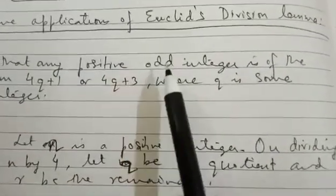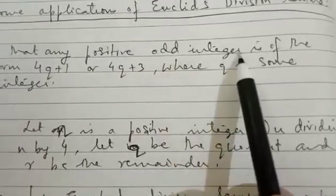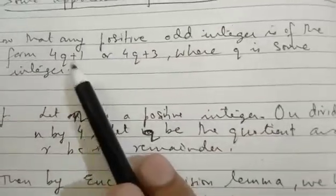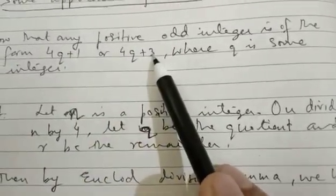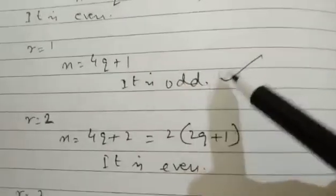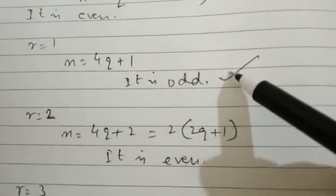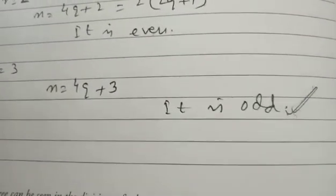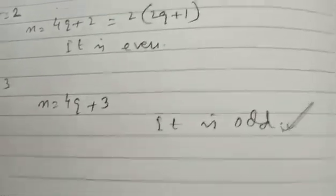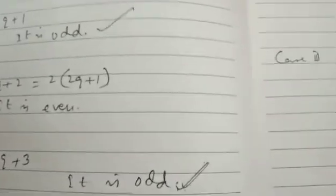If you look at the question again, we have to prove that every positive odd integer is either of the format 4q plus 1 or 4q plus 3. We have already proved it here: 4q plus 1 is the first odd case and 4q plus 3 is another odd number. Thus the proof is complete.